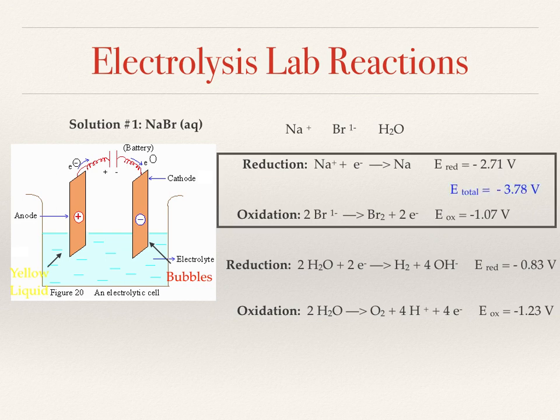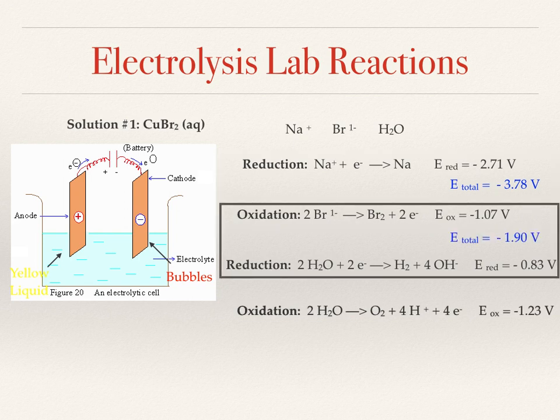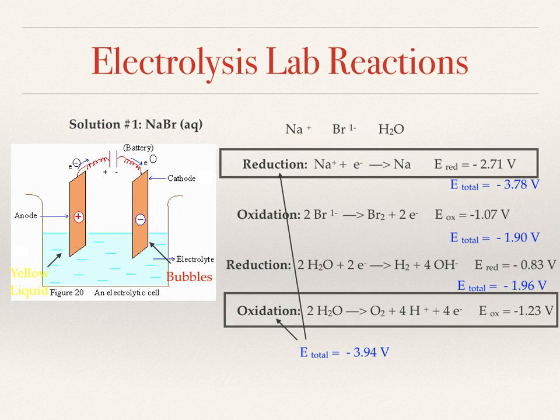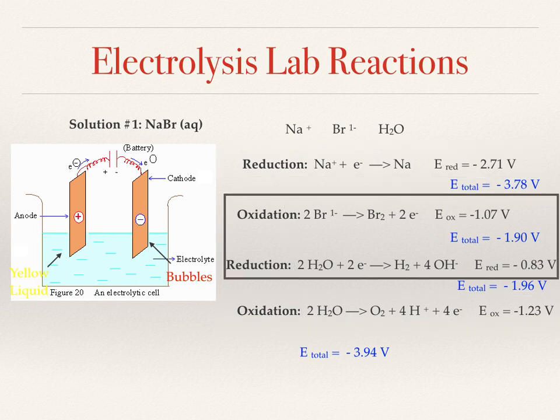Let's take a look at the reduction potentials. Your E-total in this case would be a whopping negative 3.78 volts. That's a pretty big value. Looking at our next two again, these were the same as before. The fourth combination would be the reduction of sodium and the oxidation of water, also a very big value. So we look at all of our E-totals and we're going to pick the smallest one. That would be the oxidation of your bromide ions and the reduction of water.